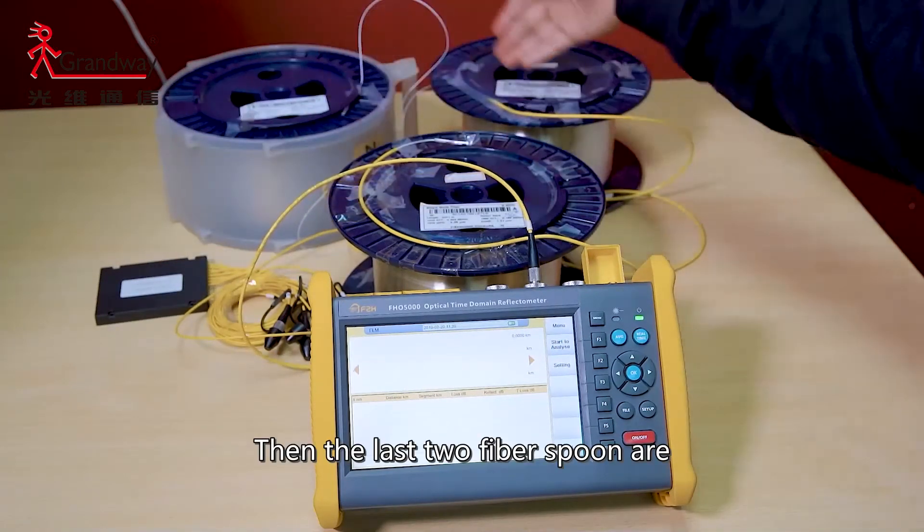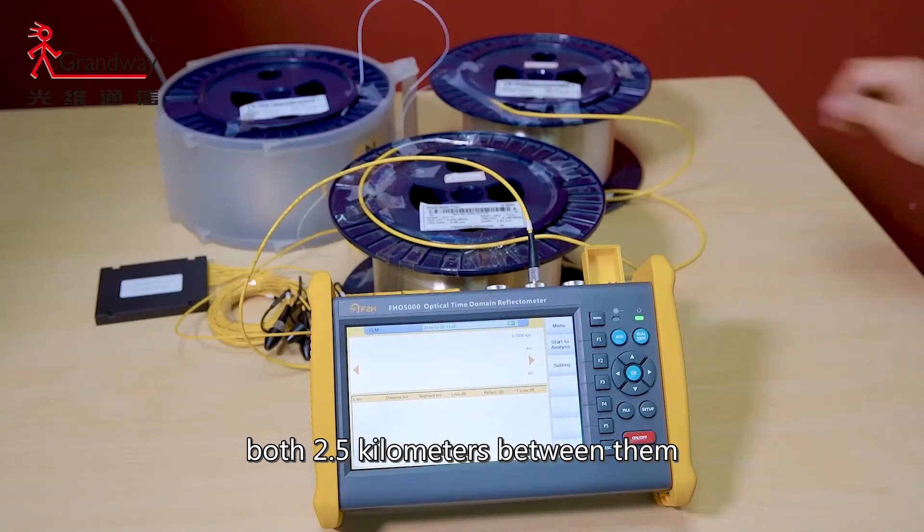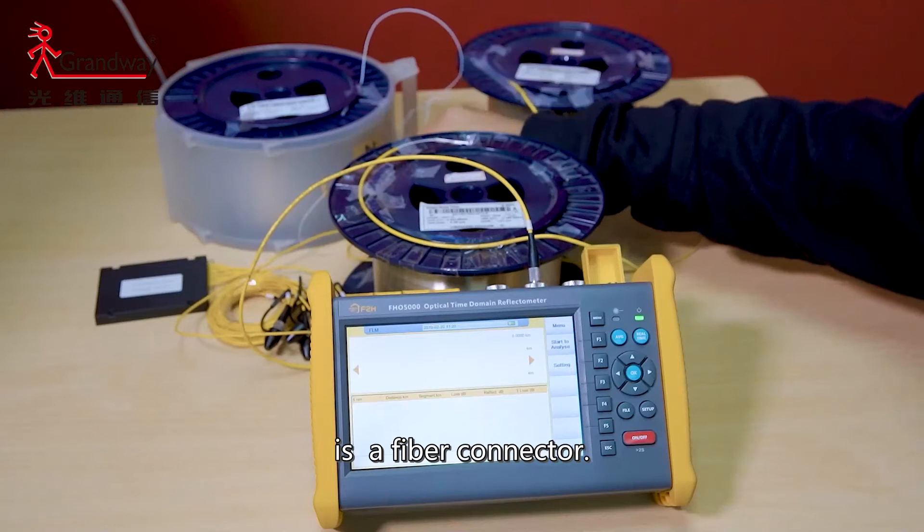Then, the last two fiber spools are both 2.5 kilometers. Between them is the fiber connector.